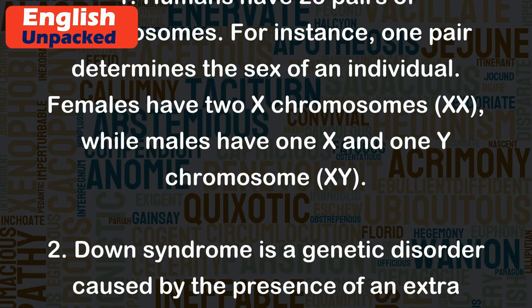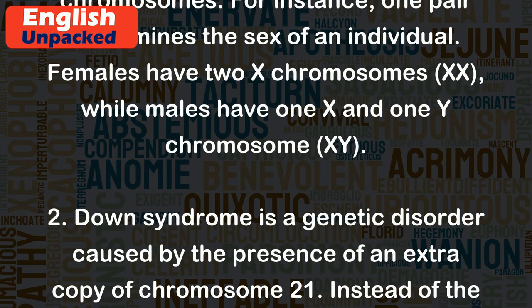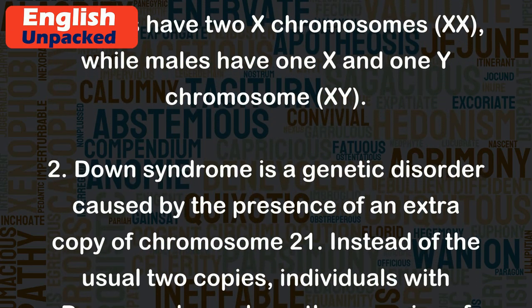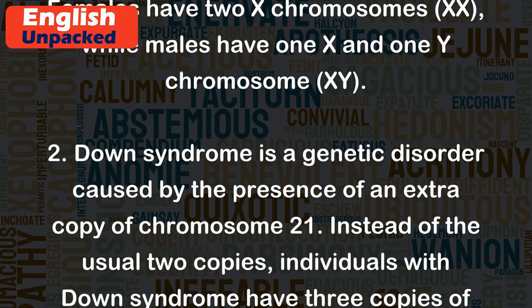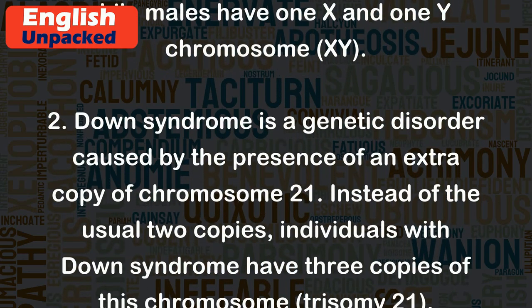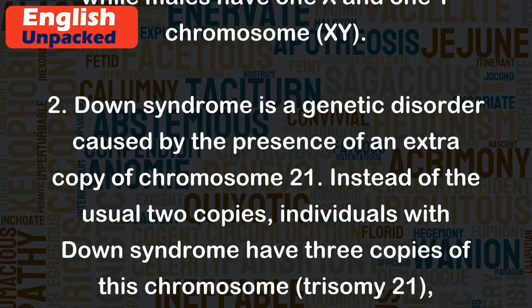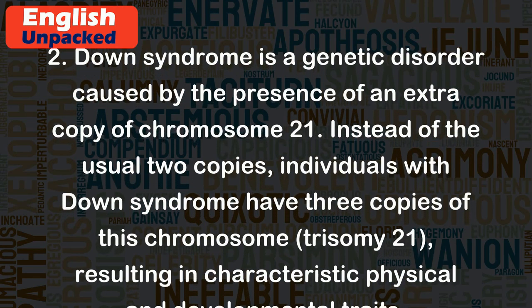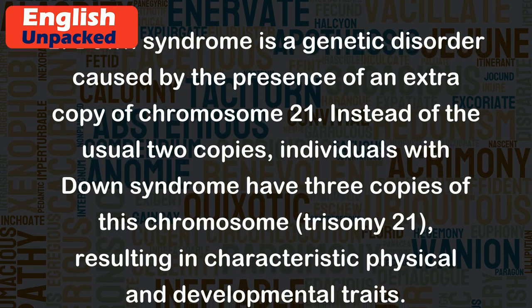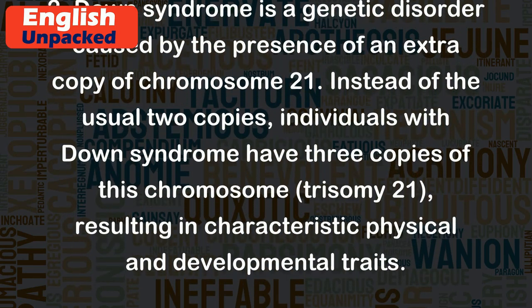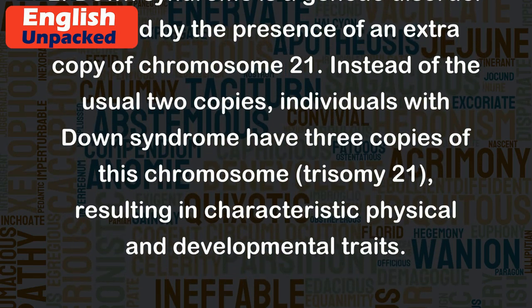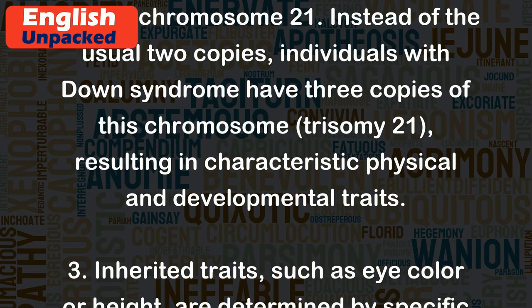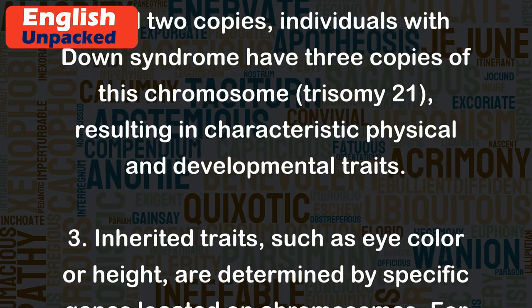Down syndrome is a genetic disorder caused by the presence of an extra copy of chromosome 21. Instead of the usual two copies, individuals with Down syndrome have three copies of this chromosome — Trisomy 21 — resulting in characteristic physical and developmental traits.